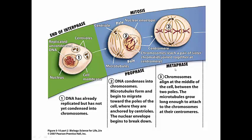The second stage of mitosis is metaphase. In metaphase, the chromosomes line up along the very center of the cell at a region referred to as the metaphase plate. The metaphase plate is not an actual structure, but is an imaginary line that runs through the middle of the cell along which all the chromosomes align themselves. It's very easy to tell if a cell is in metaphase because all the chromosomes will be located right there in the middle of the cell.